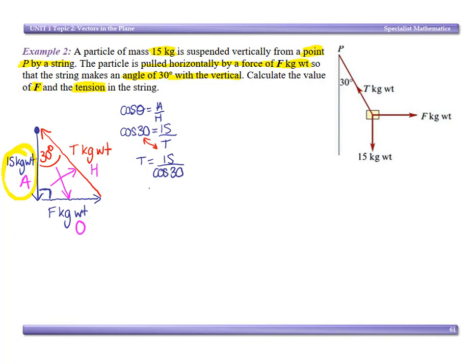If this was tech-free, you would have to answer it in exact form. It was tech-active, you could use your calculator. But cos of 30 is square root of 3 over 2. So you have 15 over root 3 on 2, which gives us 30 over root 3. We need to rationalize our denominator.